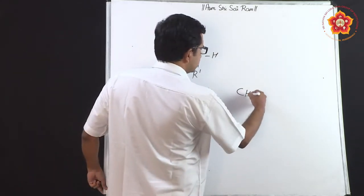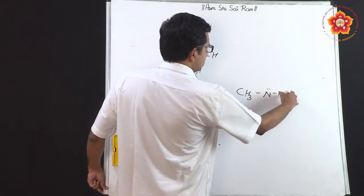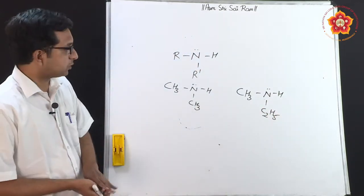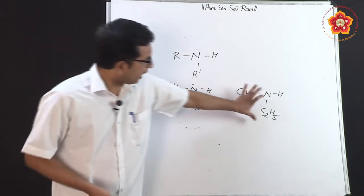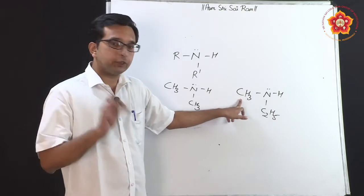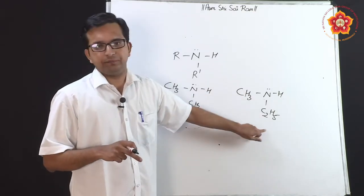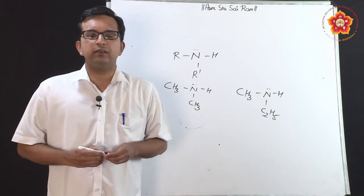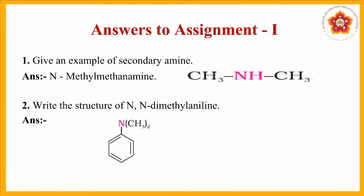Another example is CH3NH with C2H5 — you have to take the ethyl group as the parent because it is the longer chain, making methyl the substituent, giving methyl ethanamine. Any of these examples can be used. The answer given here is N-methyl methanamine, where N indicates that the methyl group is attached to the nitrogen.